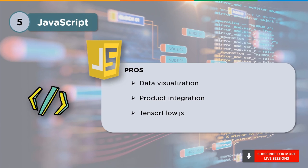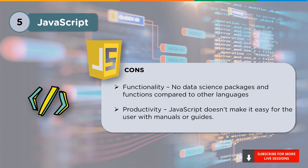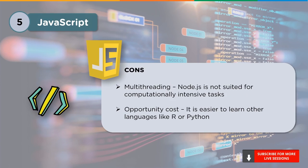Next is tensorflow.js, a machine learning library developed by Google. On the cons side, JavaScript does not offer data science packages and functions comparable to other programming languages. When it comes to productivity, JavaScript doesn't make it easy with manuals or guides. Node.js is also not suitable for computationally intensive tasks and multi-threading. When it comes to opportunity costs, it is easier to learn languages like R or Python.